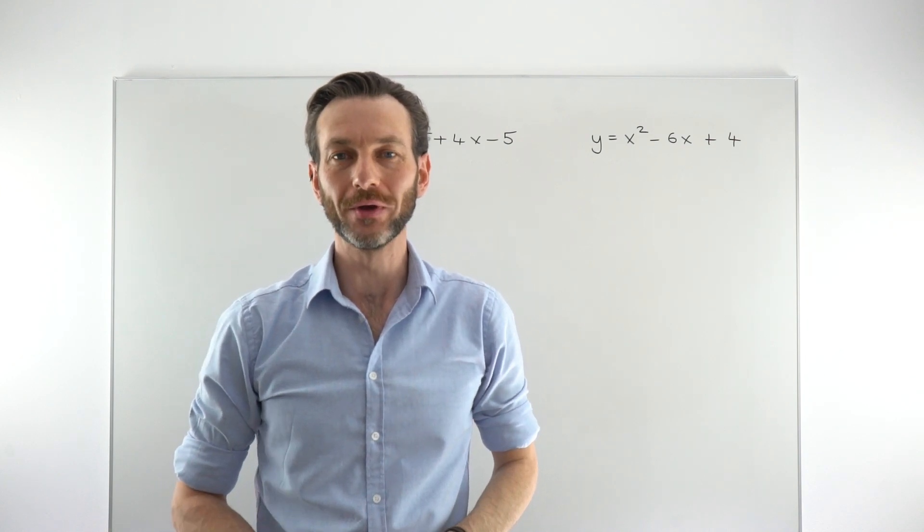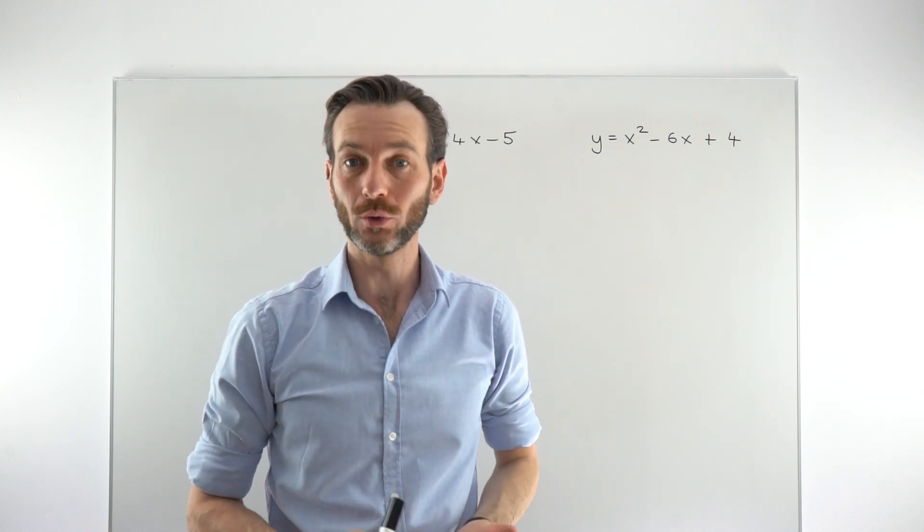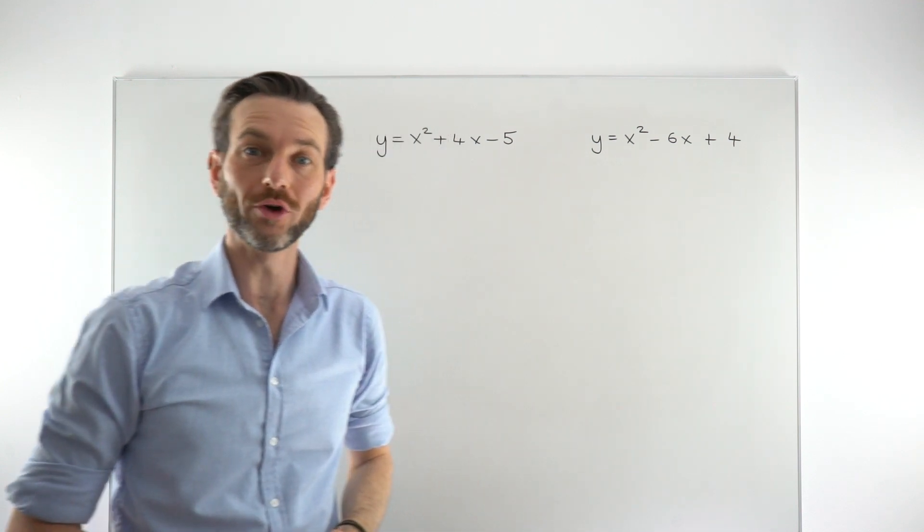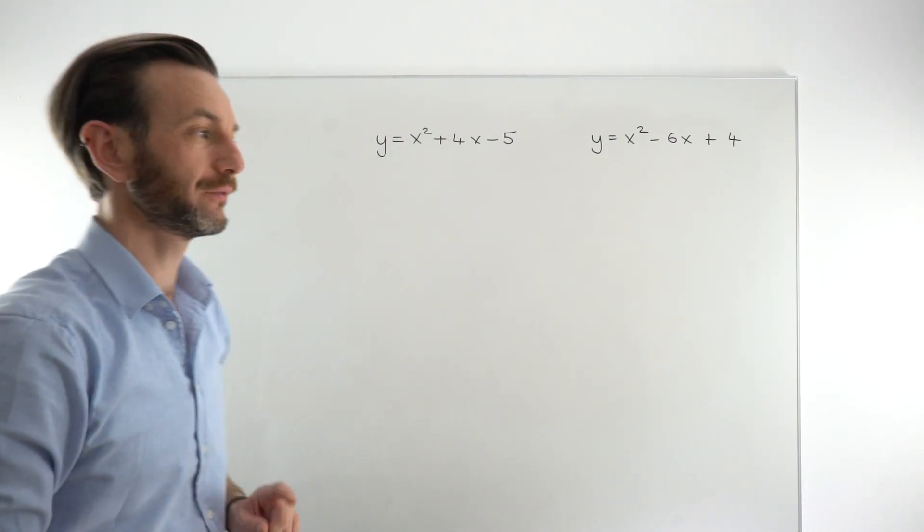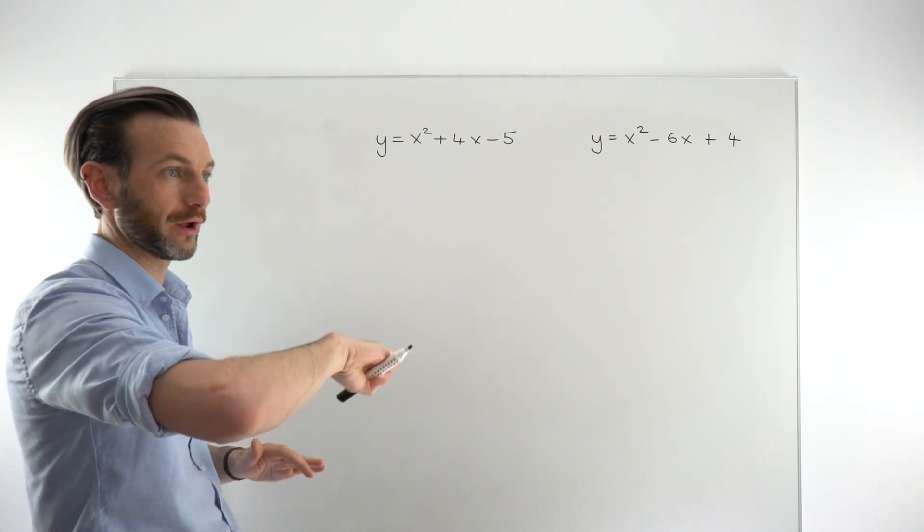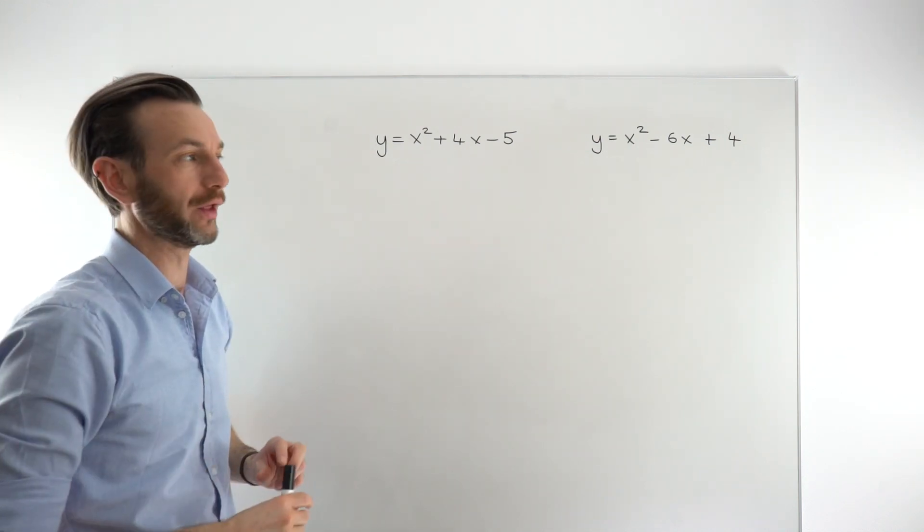In this class we're going to consider how you find the turning point of the graph of a quadratic function. So remember quadratic functions make parabolic, like U-shaped graphs. And we're going to figure out how you find where those graphs change direction, which we call the turning point.